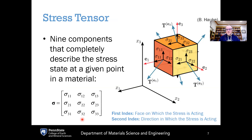Starting with the mechanical force, we can describe this based on a stress tensor at a given point in the material. The stress tensor is given by bold sigma, and this is a 3x3 matrix that contains nine components that completely describe the stress state at a given point in a three-dimensional material. The first index is the face on which the stress is acting, and the second index is the direction in which the stress is acting. So if it is acting on the third face along the first direction, that would be sigma-31 and so on.